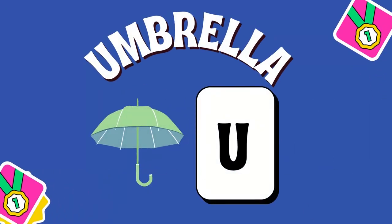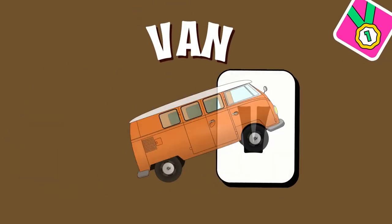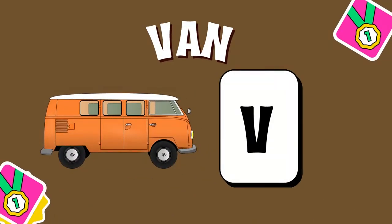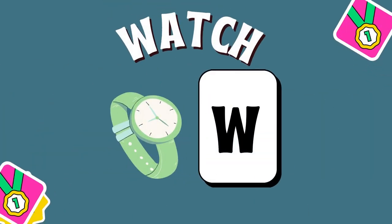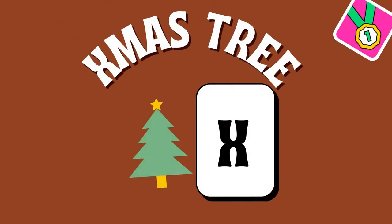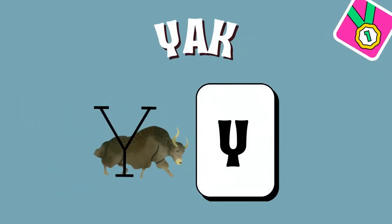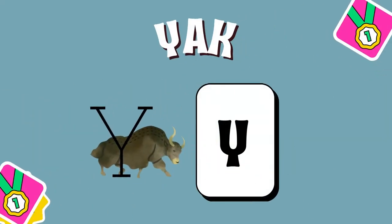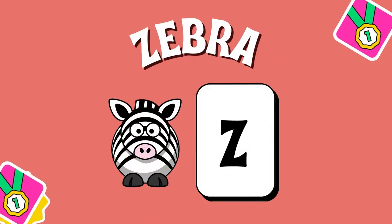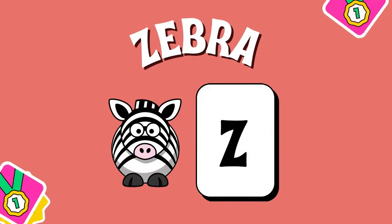U for umbrella, V for van, W for watch, X for x-ray, Y for yak, Z for zebra.